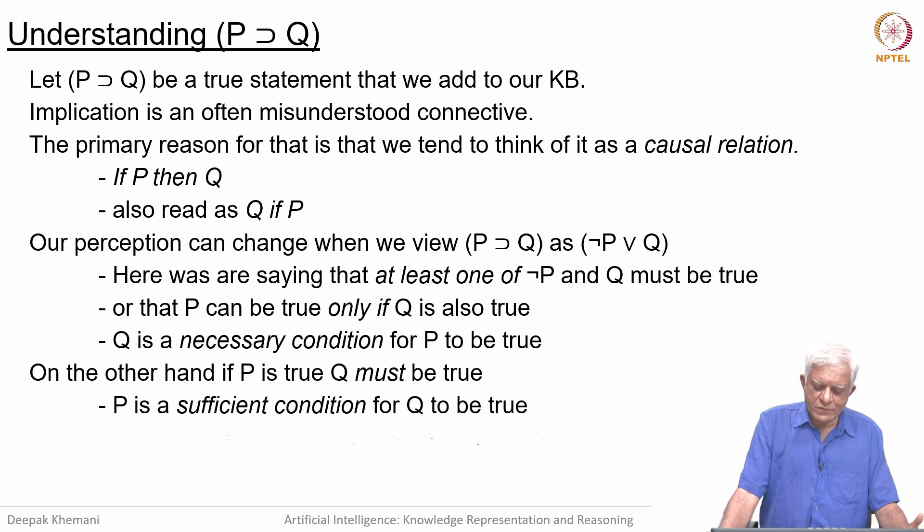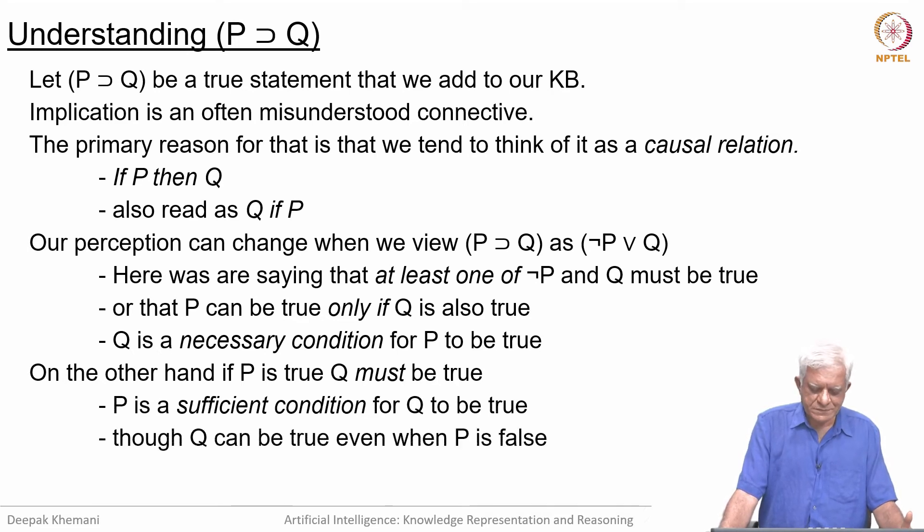On the other hand, if P is true, Q must be true. If you look at the truth table, then as we will see in a moment again, you will see that that is the case. We say that P is a sufficient condition for Q to be true. If P is true, then it is sufficient to say that Q is true. Of course, Q can be true even when P is not true. We will look at these examples now.